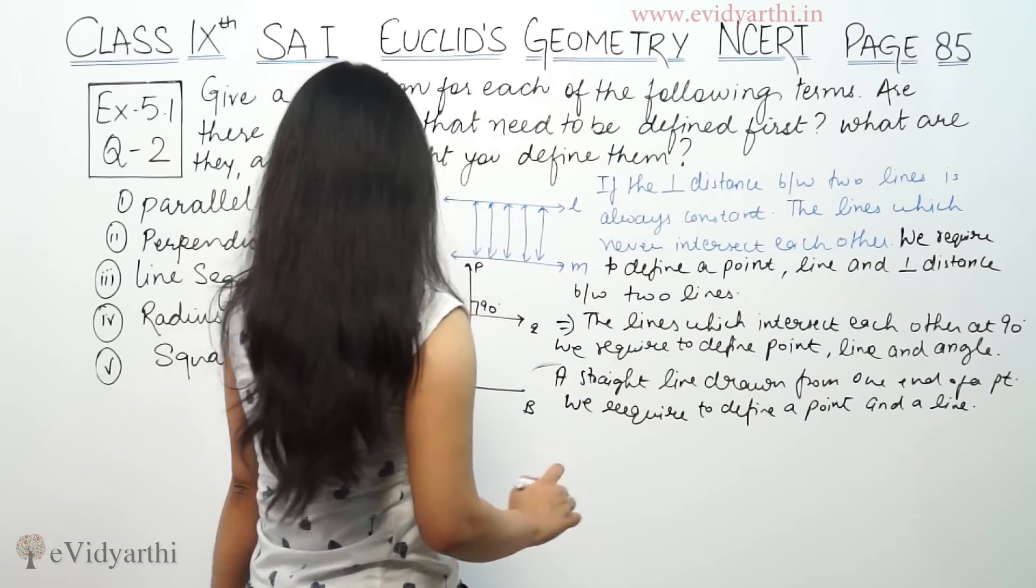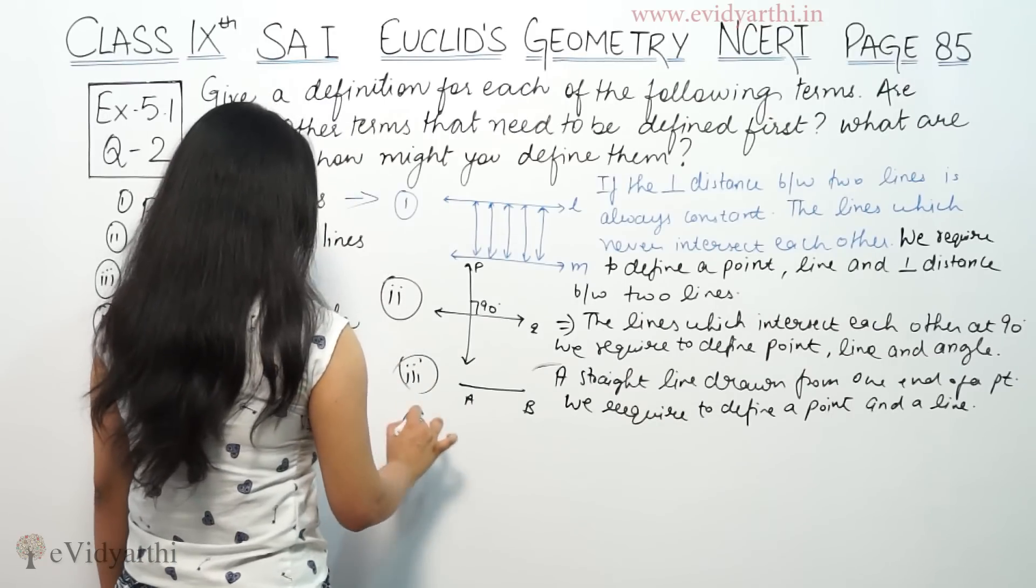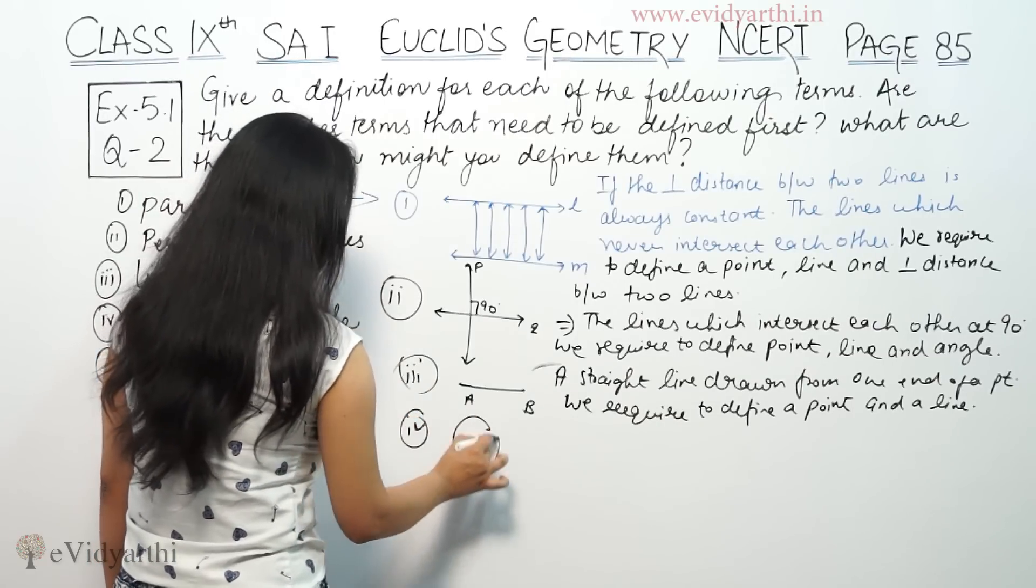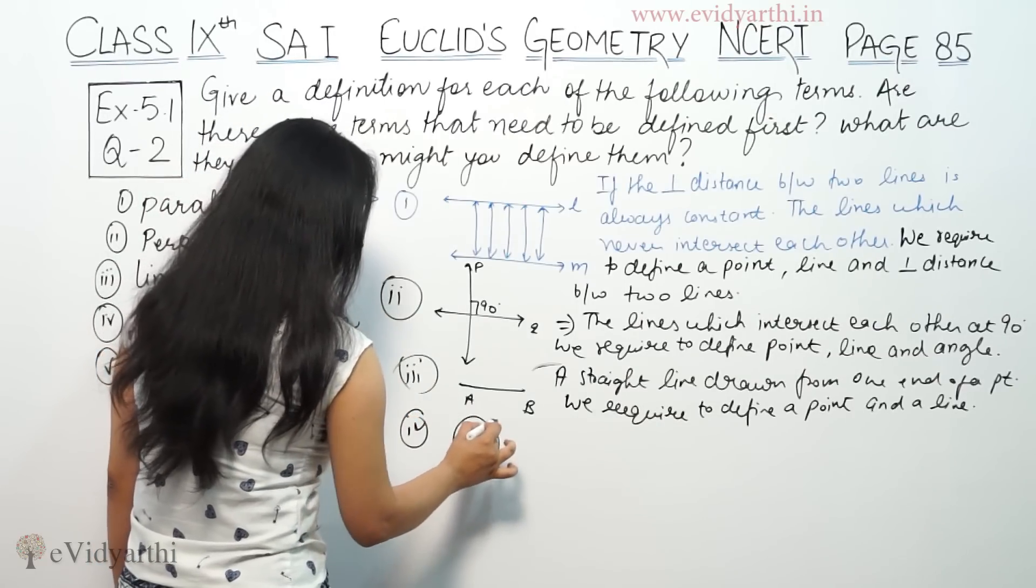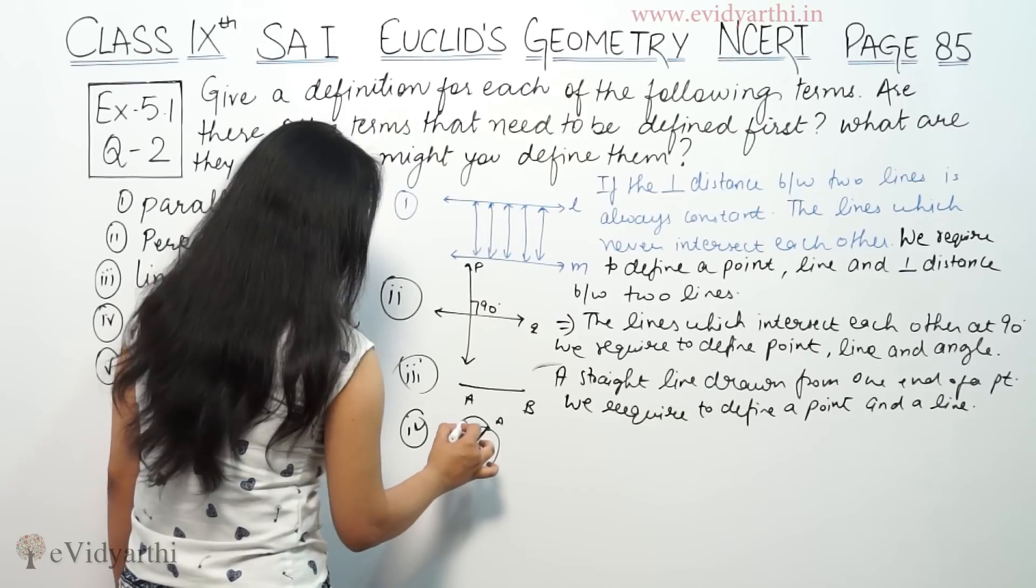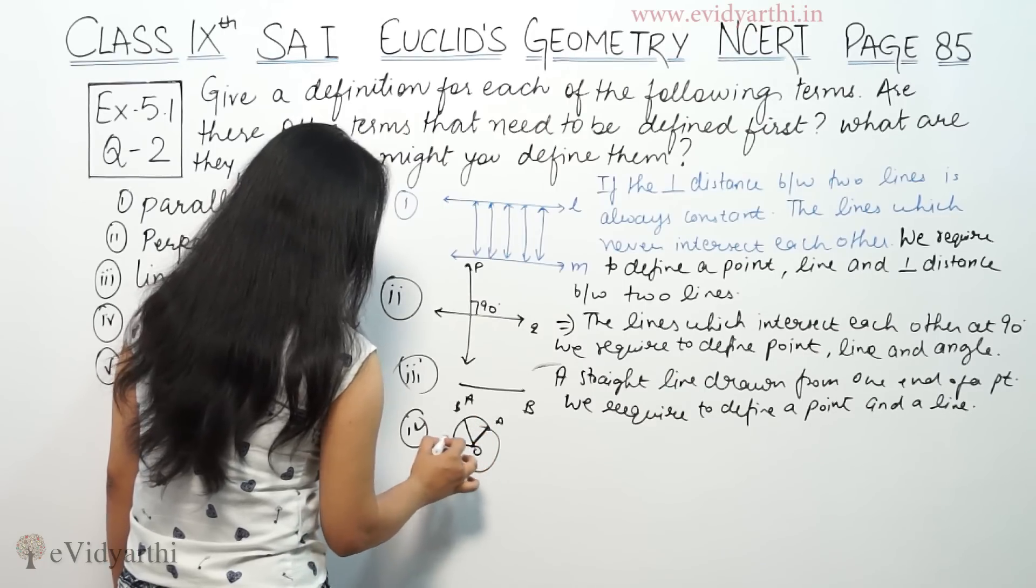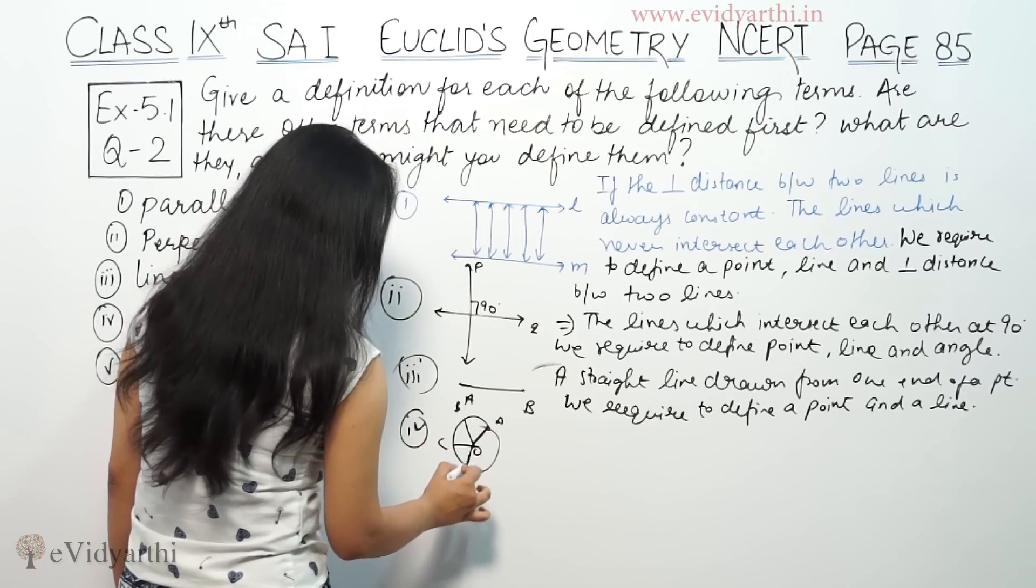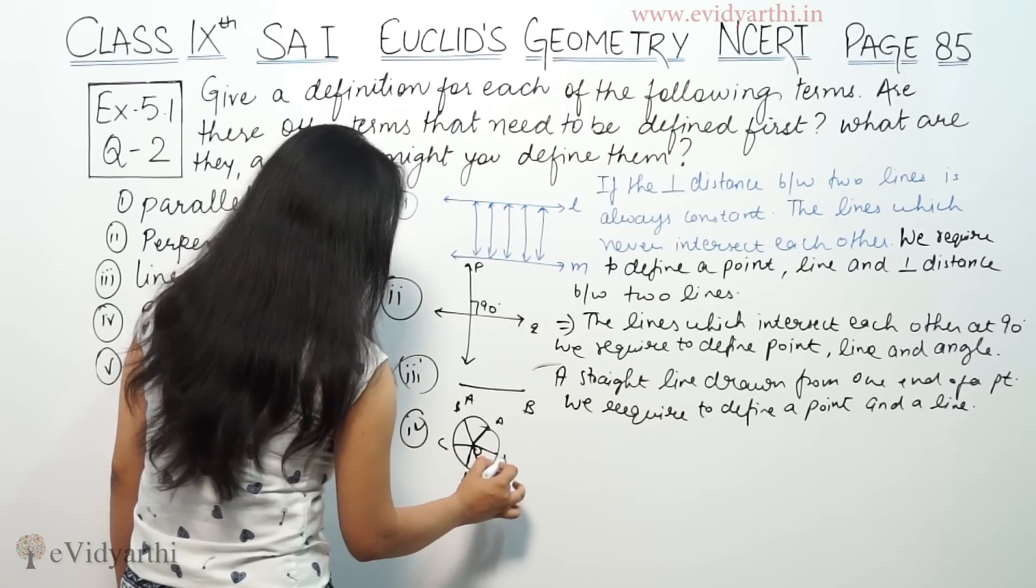Now the circle. This is the center O. This is the radius OA, OC, OD, OE, OF. That means from the center to any point on the circle, the distance is the same.